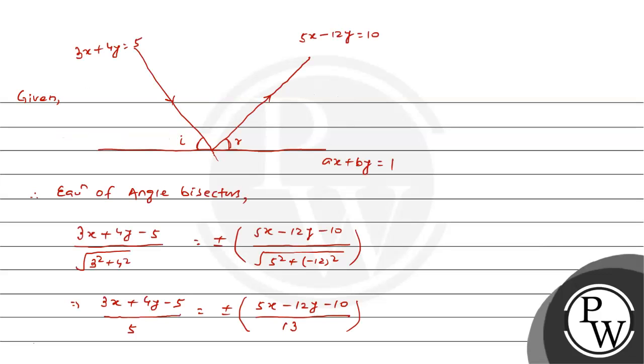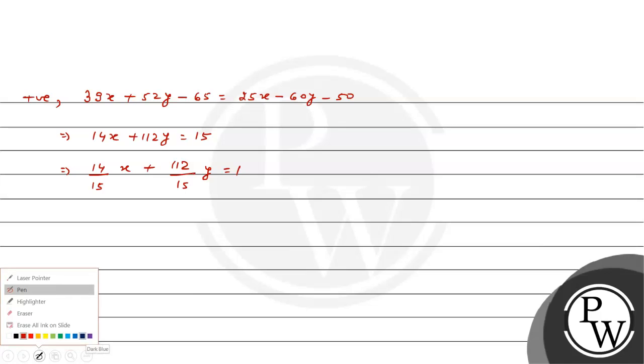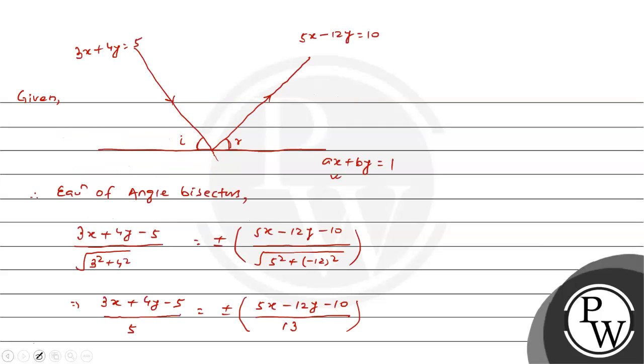This gives 14x plus 112y equal 15. Dividing by 15: (14 by 15)x plus (112 by 15)y equal 1. Comparing with ax plus by equal 1, we get a equal 14 by 15 and b equal 112 by 15.